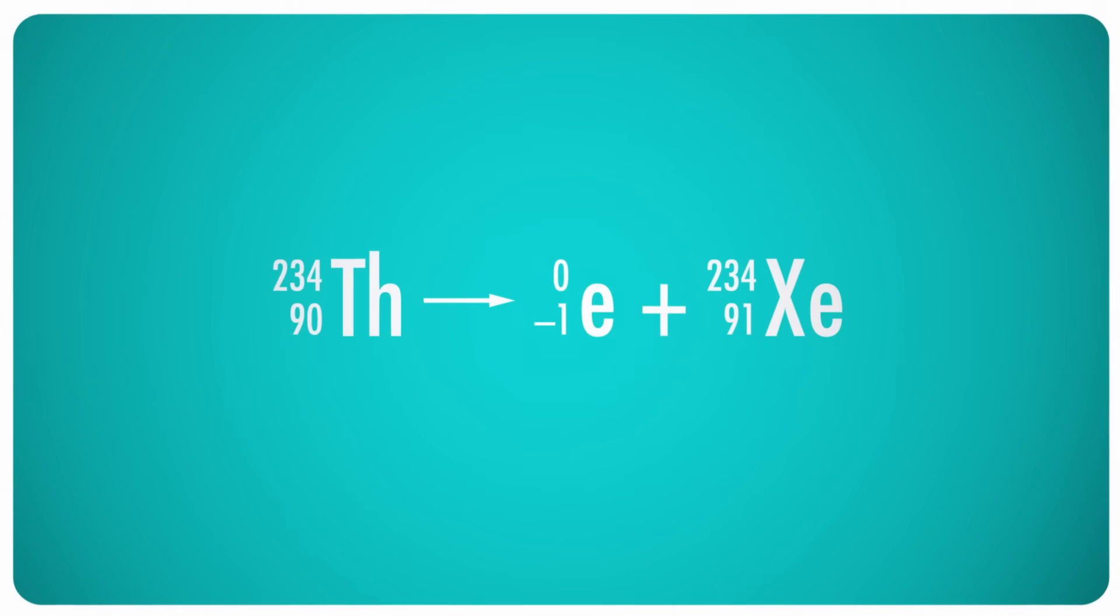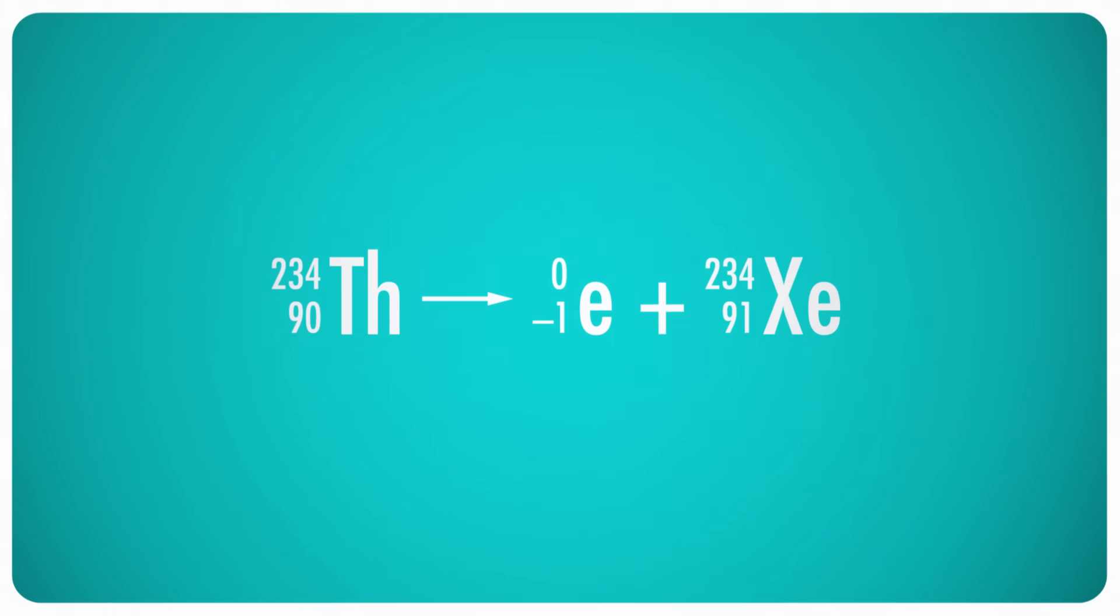Notice that, again, the way we write this is a little different. Even though the thorium emits an electron, we don't use the usual symbol for electrons. Instead, we write it in nuclear notation form, with the mass number at the top and the atomic number at the bottom.